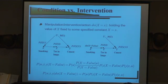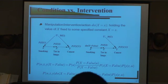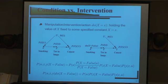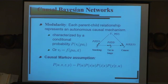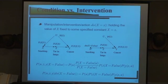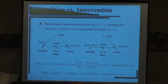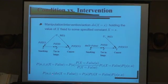To distinguish between observation and intervention, Pearl introduced the do-operator. We use this do-operator to represent manipulation, fixing the value of a particular variable X to a particular constant. In the graphical model, fixing the value of X means we cut the incoming links to X. The distribution after the intervention is given by an expression where the corresponding factor for X is removed.